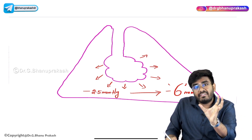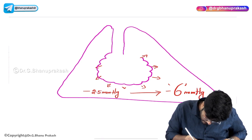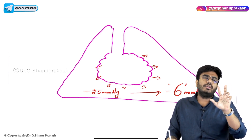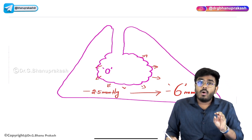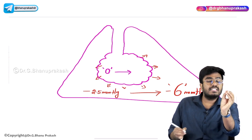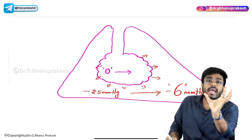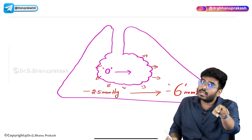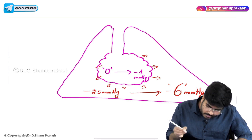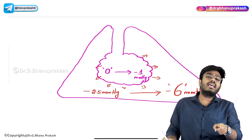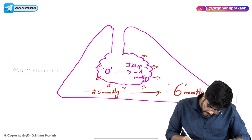What happens to the alveolar cavity size? The alveolar cavity is expanding — the alveoli are becoming much bigger. During resting state, the pressure inside the alveolus is zero. Now, as the alveolus becomes bigger and its volume increases, the pressure inside the alveolus falls. From zero, it will become minus 1 mmHg. During inspiration, the intra-alveolar pressure becomes minus 1 mmHg.